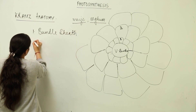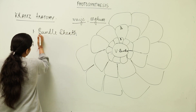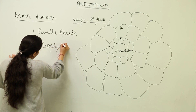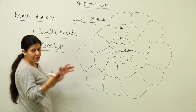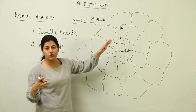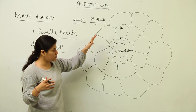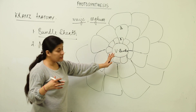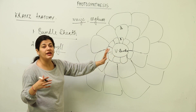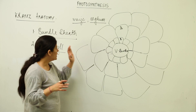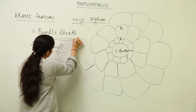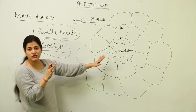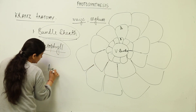Such an arrangement means oxygen entry is avoided. To understand what is happening inside the bundle sheath cells and mesophyll cells, we need to note that the bundle sheath chloroplasts are agranal — please remember this important point. The chloroplasts of the bundle sheath cells are agranal, meaning they lack grana.